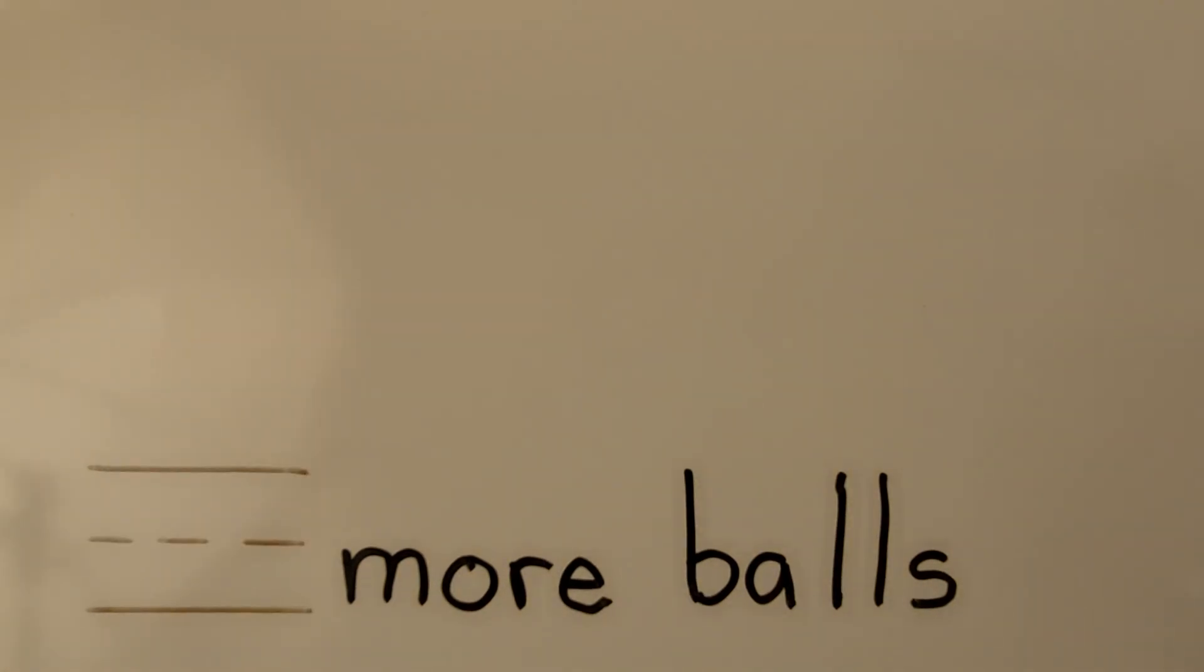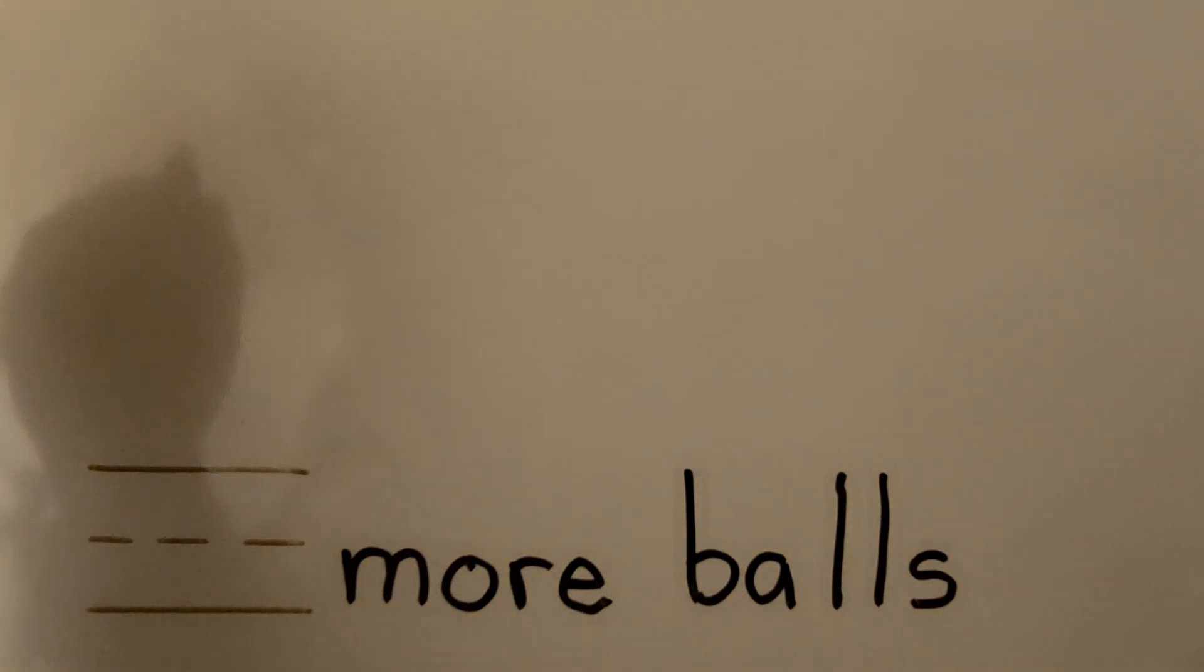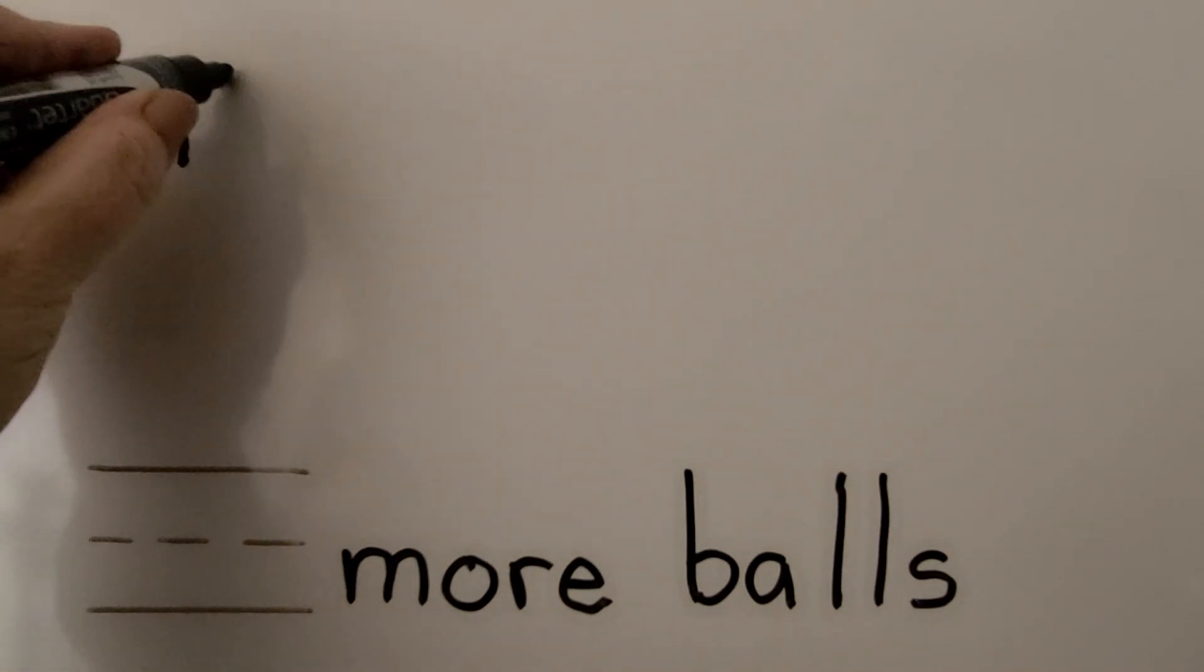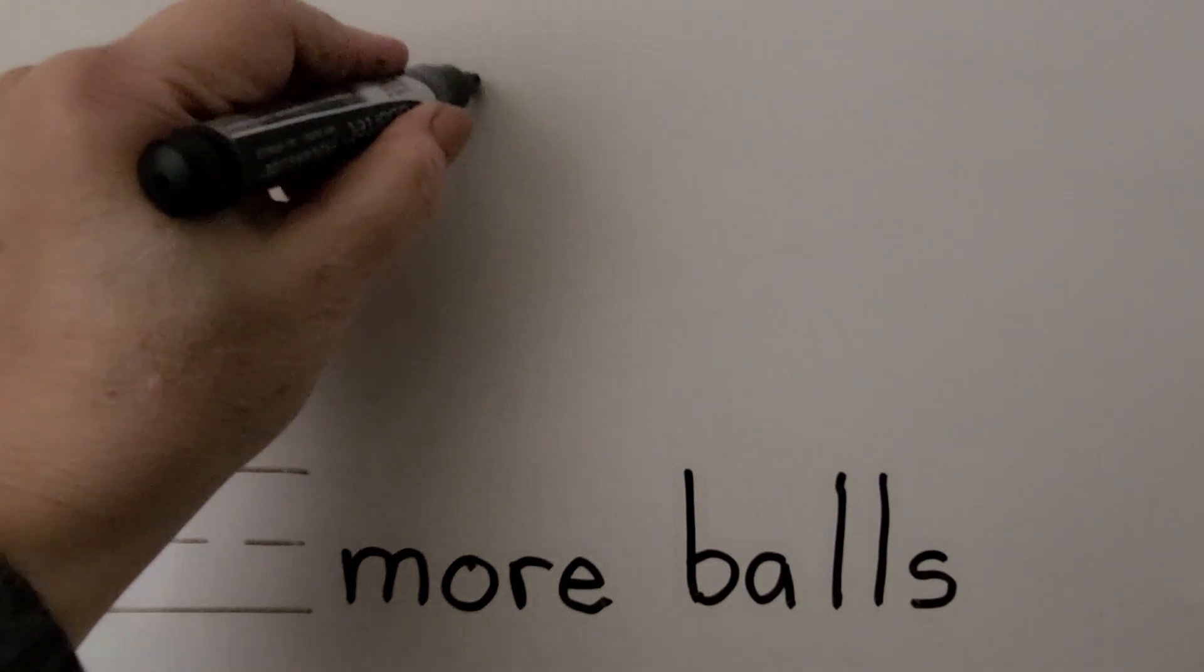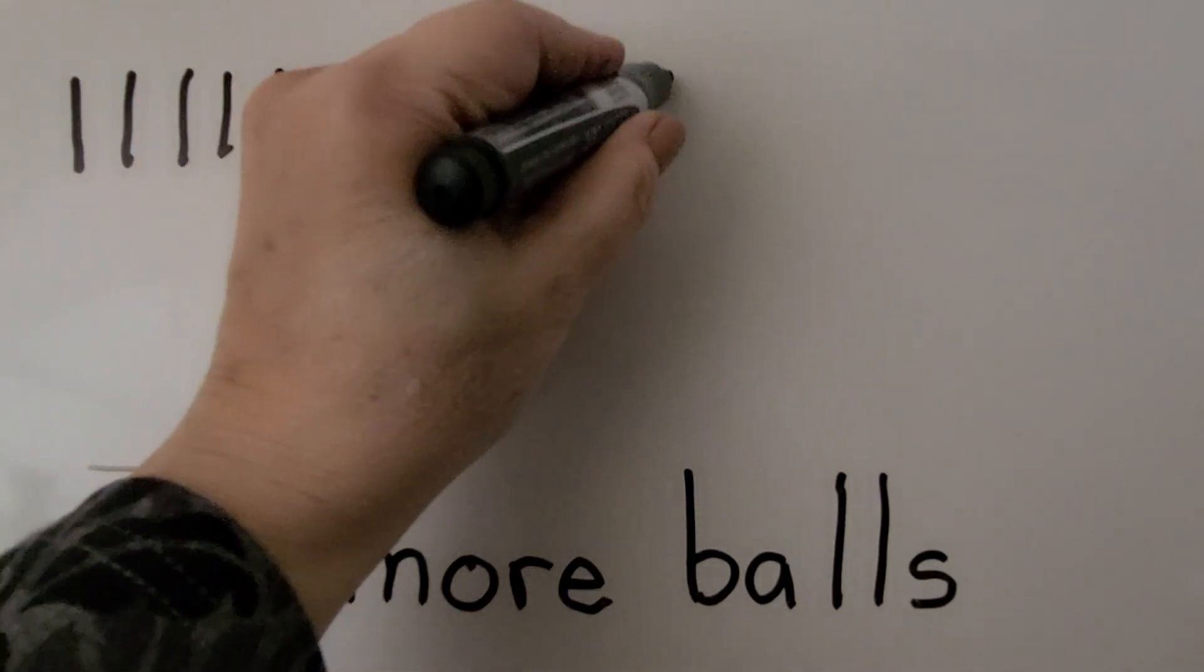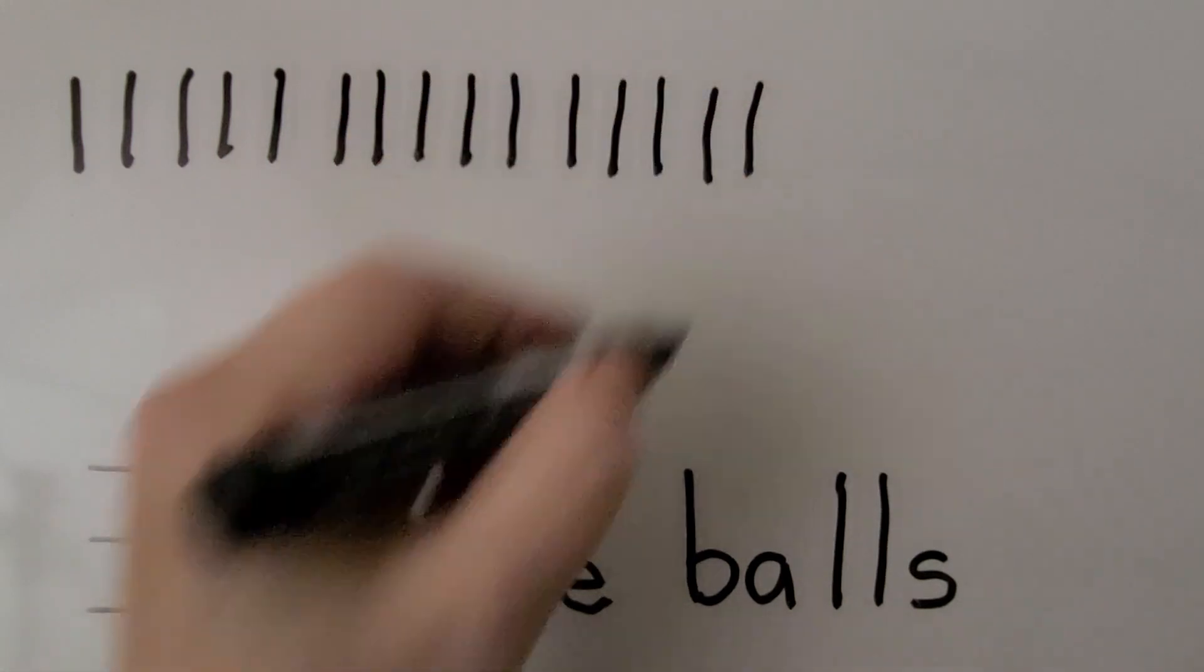We can draw a quick picture to help us find the answer. We need 15 children. We can draw 15 lines to represent 15 children. Counting 1, 2, 3, 4, 5, 6, 7, 8, 9, 10, 11, 12, 13, 14, 15.